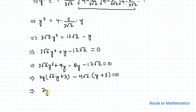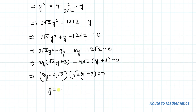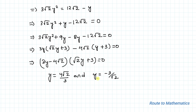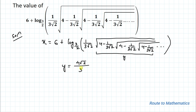So we have (3y − 4√2)(√2·y + 3) = 0. This gives y = 4√2/3 or y = −3/√2. Since y is defined as a nested radical expression, it cannot be negative. Therefore we discard y = −3/√2 and accept y = 4√2/3.